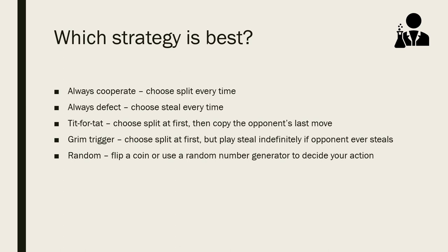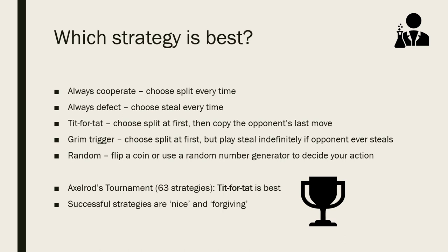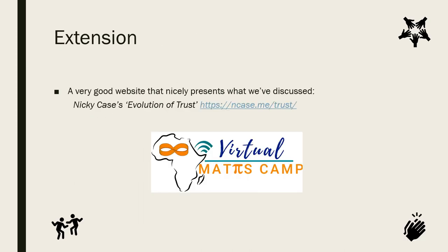So which strategy scored you the most points? In 1980, Robert Axelrod made a tournament where he played 63 different strategies against each other to see which one came out on top. And out of all of them, it was tit for tat that won. In general, the most successful strategies were nice — meaning they started off cooperating by playing Split — and forgiving, meaning that they wouldn't do what Grim Trigger does and fully stop cooperating once the opponent played Steal. I guess the fact that nice and forgiving strategies are the best is a good sign for society. And that's the end of this session. If you enjoyed the topic, there's a very good website called Nicky Case's Evolution of Trust, which goes into more detail. Thank you and enjoy the rest of your Virtual Maths Camp.